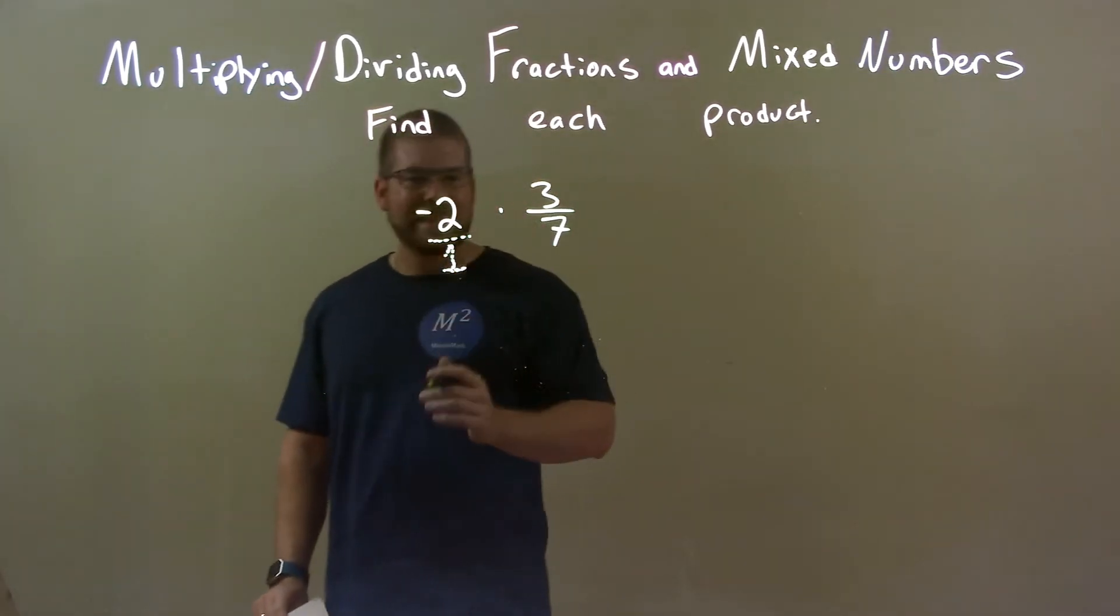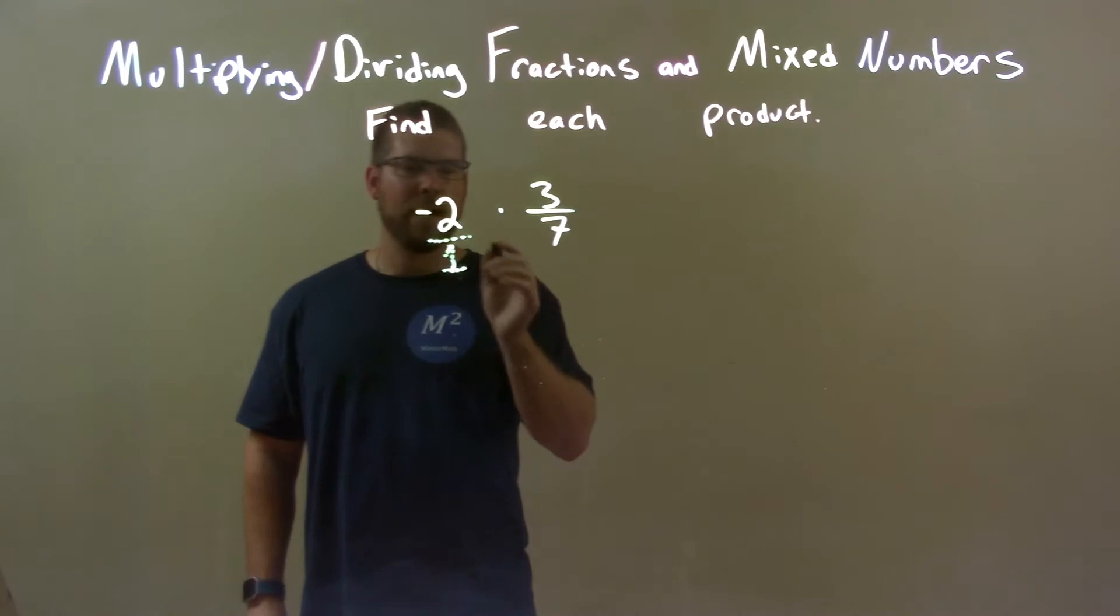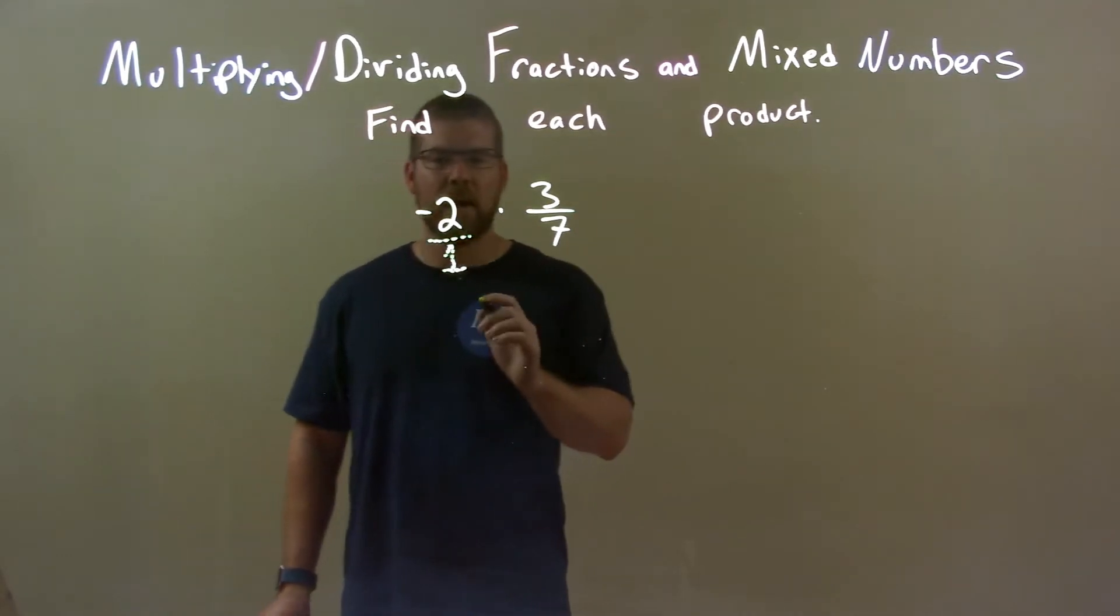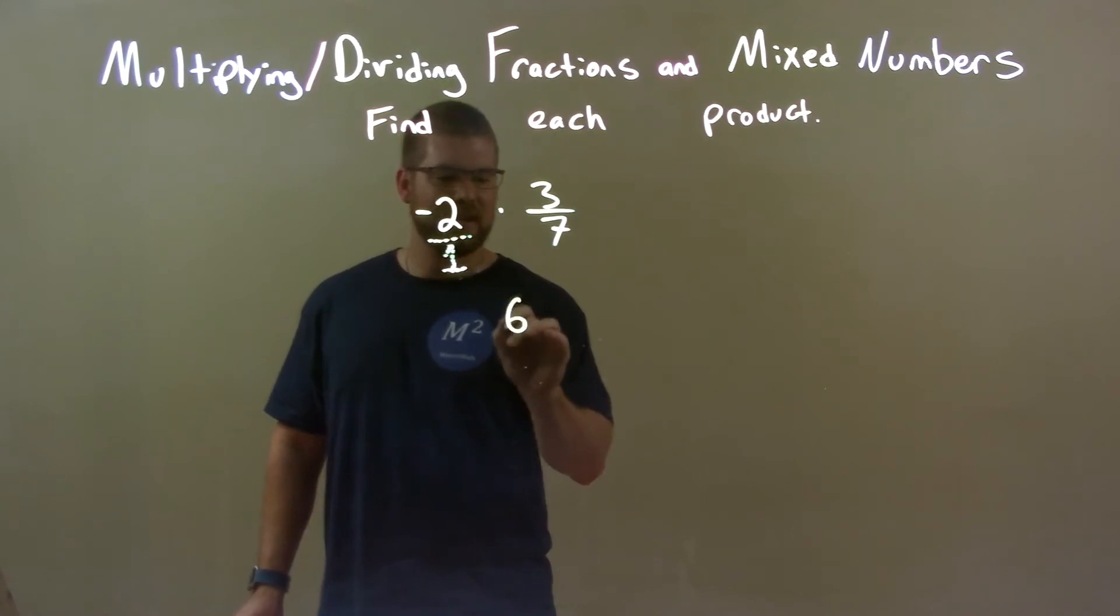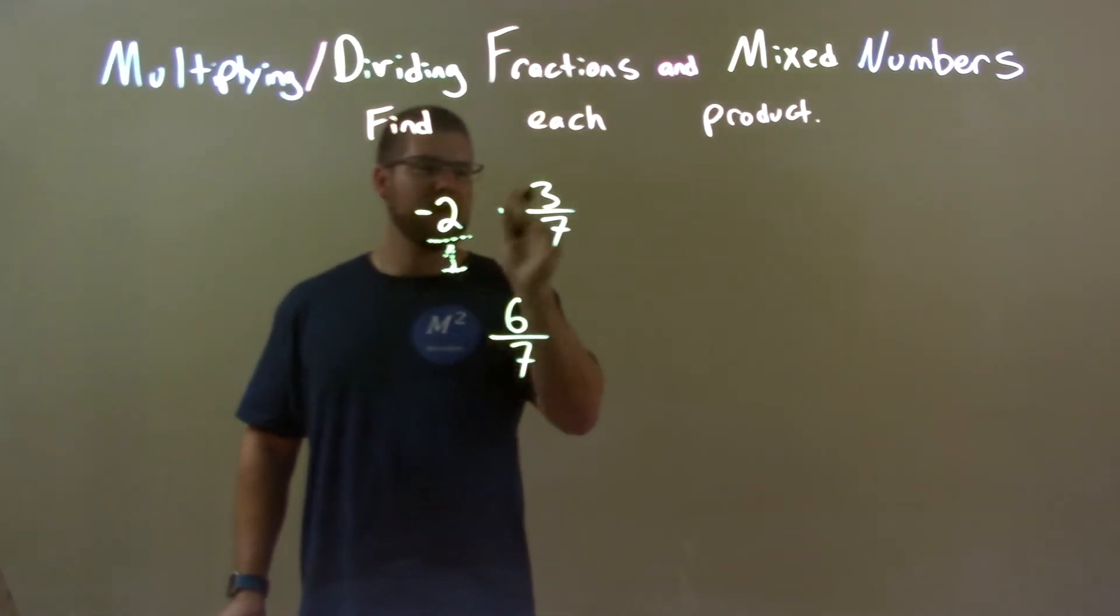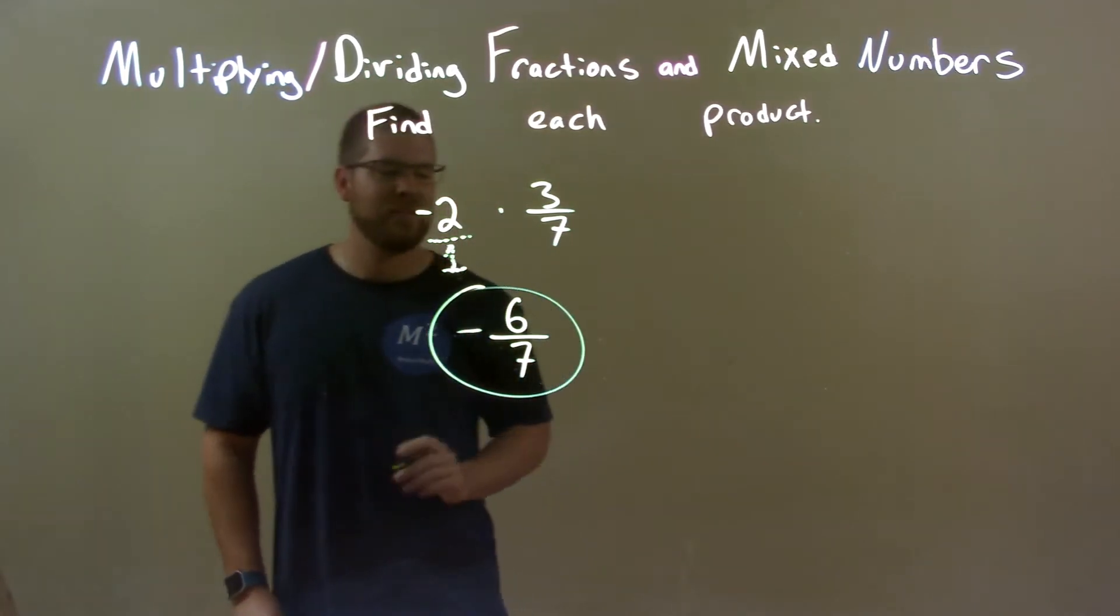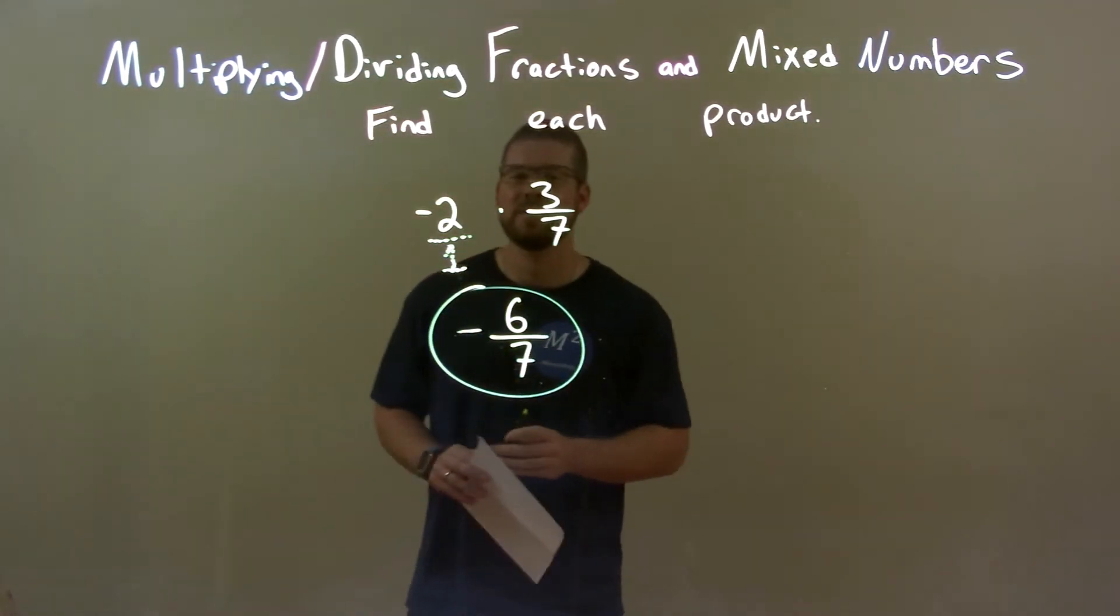So with that, we just multiply like we do all the other fractions, across the numerator and across the denominator. 2 times 3 is 6, and 1 times 7 is 7. A negative times a positive is a negative, so our final answer is just negative 6 over 7.